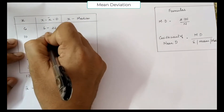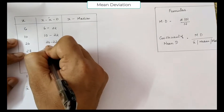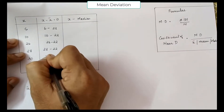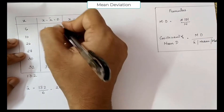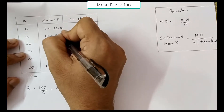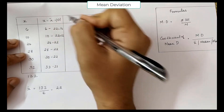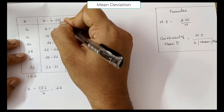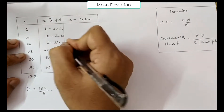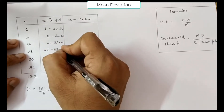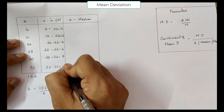We subtract 22 from each value: 6 minus 22, 10 minus 22, 26 minus 22, 28 minus 22, 30 minus 22, 32 minus 22. We are not taking the sign here — we use modulus, which means we ignore the negative sign. The results are: 16, 12, 4, 6, 8, and 10.